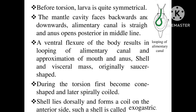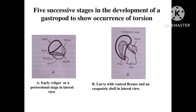The mechanism of torsion takes place in the 48-hour larva — specifically the veliger larva — and has five successive stages. The first is the early veliger or pre-torsional stage, shown in lateral view. Next comes the larva with ventral flexure and an exogastric shell, also shown in lateral view. The exogastric shell means the shell is positioned anteriorly.